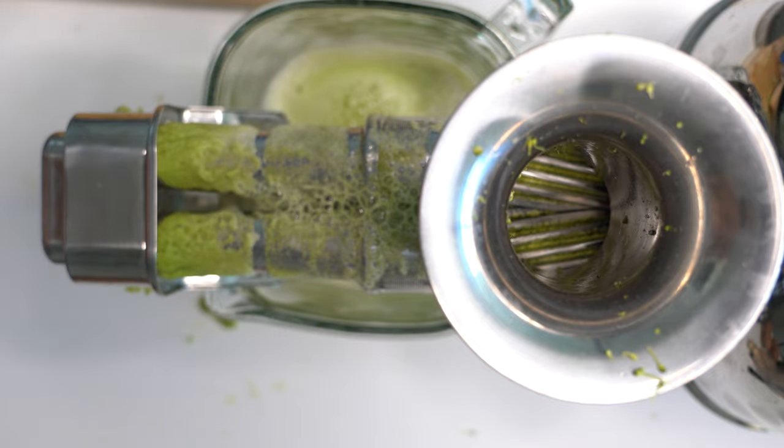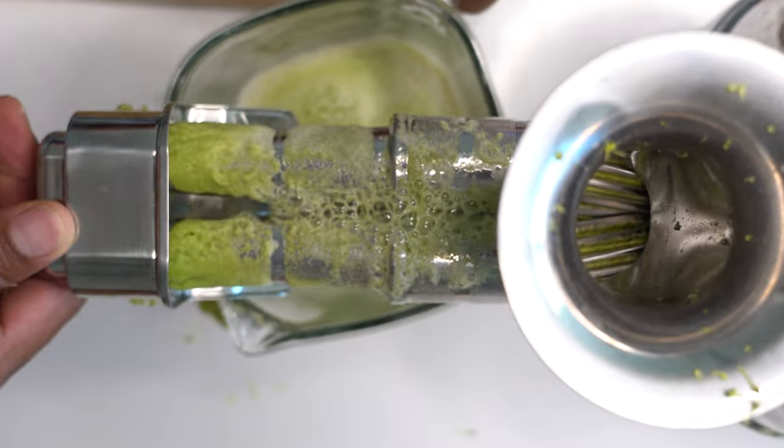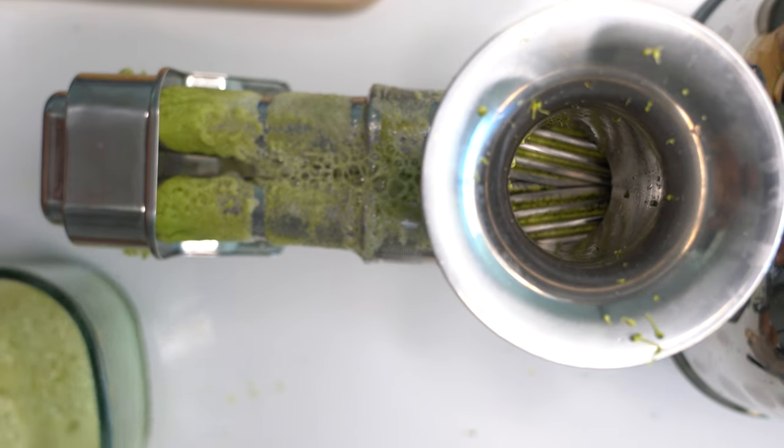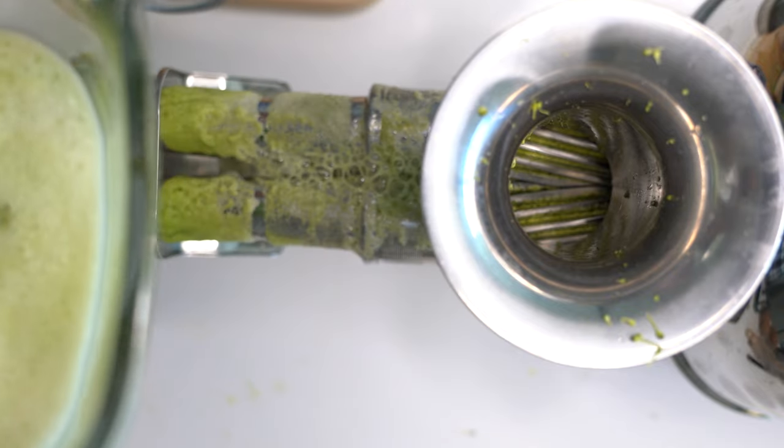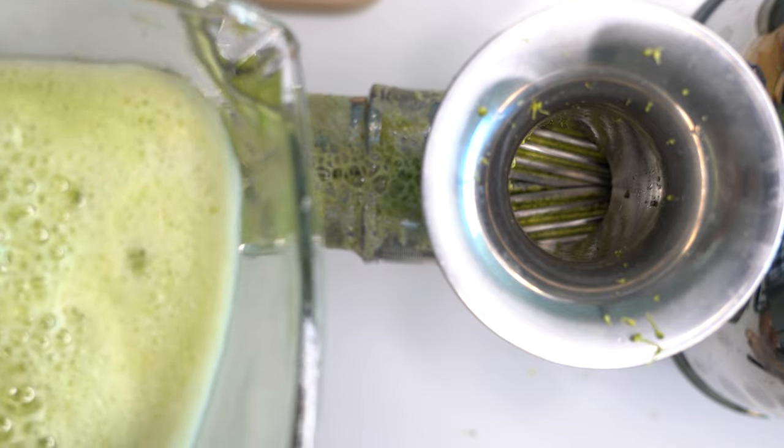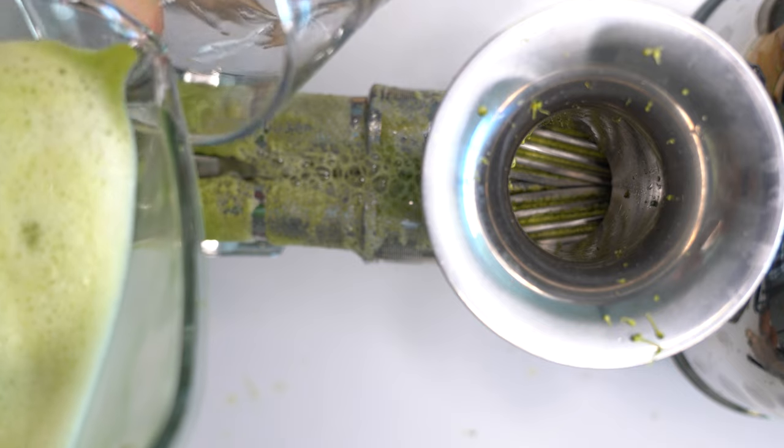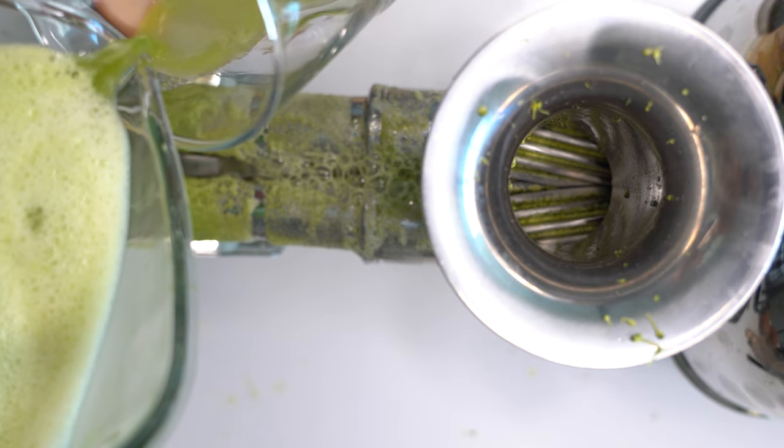We're going to take a look at the juice that actually came out. So this is the fresh broccoli juice. I'm just going to go ahead and try to pour it at an angle so we don't get so much foam.